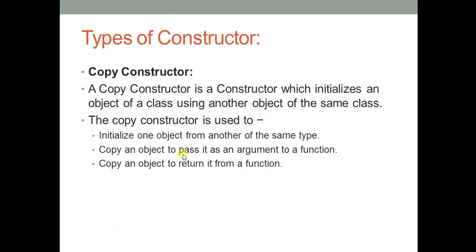The last type is the copy constructor. A copy constructor is a constructor which initializes an object of a class using another object of the same class. It is similar to the parameterized constructor in that it also accepts arguments, but this time the argument is not a normal value — the parameter is in the form of an object. When we pass the object, all its various properties are passed along with it at the same time.